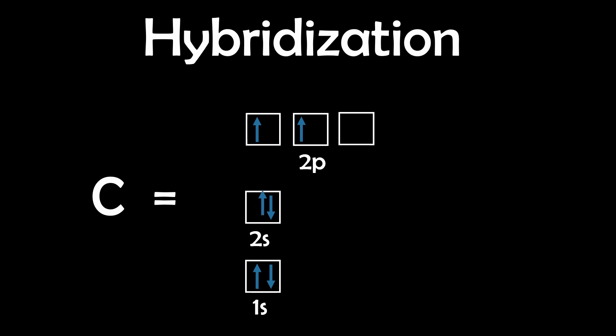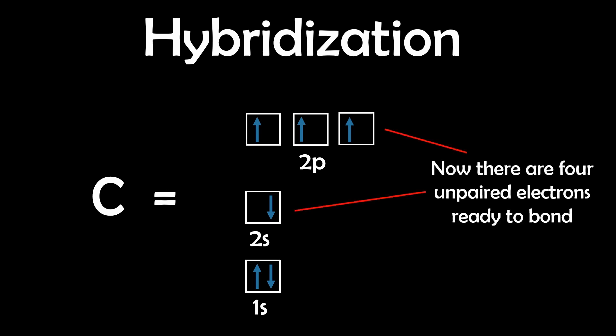Essentially, one electron from the lower energy 2s orbital in carbon is promoted to the last available 2p orbital, giving carbon four unpaired electrons, each capable of forming a bond.